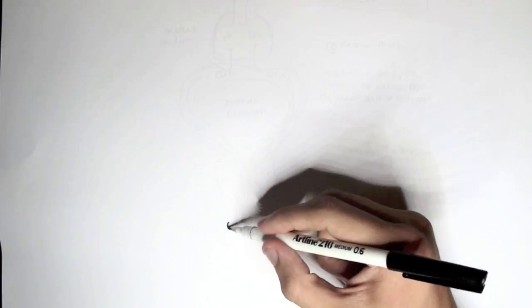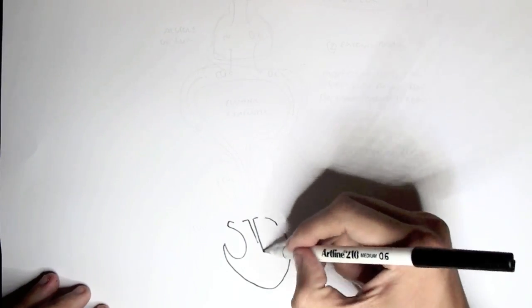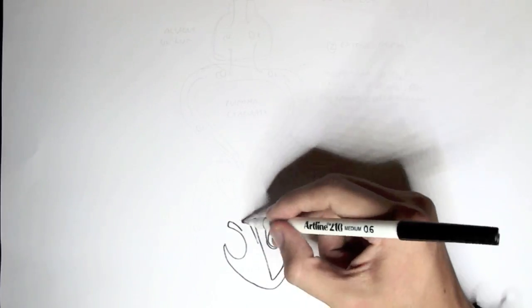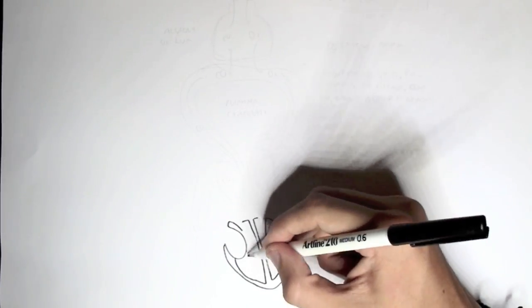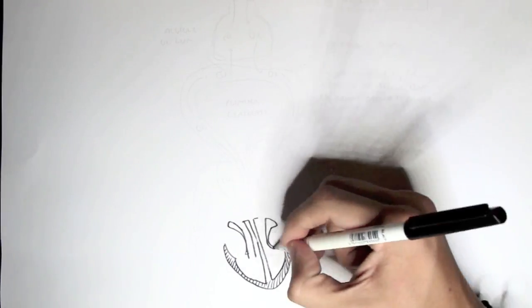Now to learn about the respiratory system, we actually have to learn about the circulatory system, about the heart, and how it pumps blood throughout our body. It's important to know about the circulatory system because the respiratory system and the circulatory system coincide together — they work together. So funny enough, we begin learning about the respiratory system by learning about the heart.